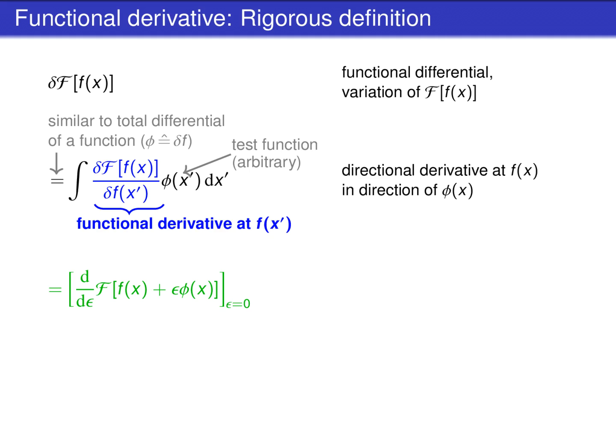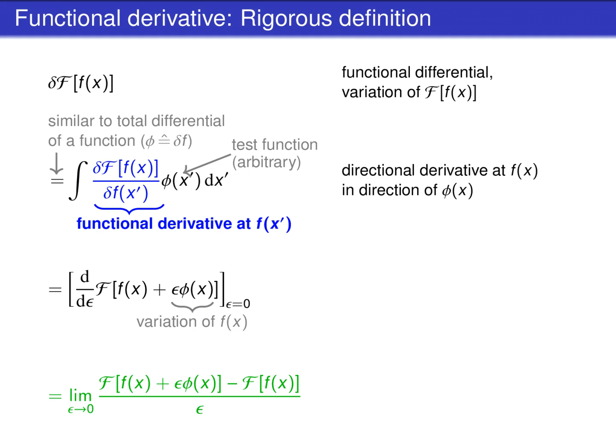The directional derivative is defined as the ordinary derivative of the functional with respect to epsilon at epsilon equals 0, where the functional is considered at f plus epsilon times phi. The equation given by lines 2 and 3 defines the functional derivative in a mathematically rigorous way. Epsilon times phi is a so-called variation of the function f. The ordinary derivative with respect to epsilon is defined by a difference quotient. If we choose a Kronecker delta function of x minus x' as test function phi, lines 2 and 4 of the equation result in the non-rigorous definition of the functional derivative seen on the previous slide.